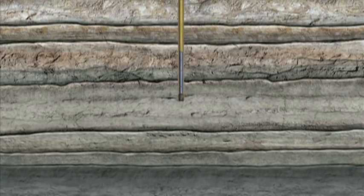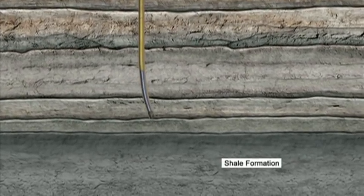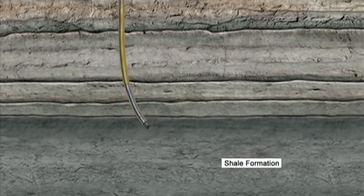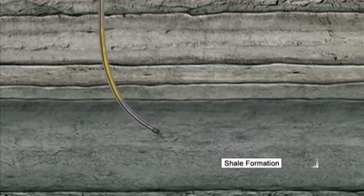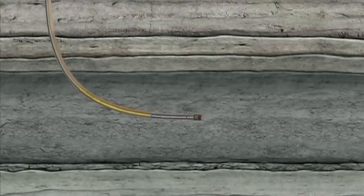If the plan is to drill a horizontal section, a special type of drilling device is used to begin to create the curved section. A downhole drilling motor containing a gyroscope is used, which can drill at an angle.